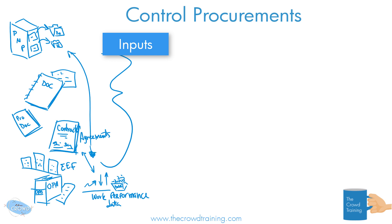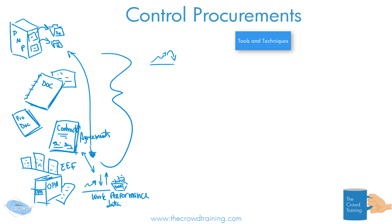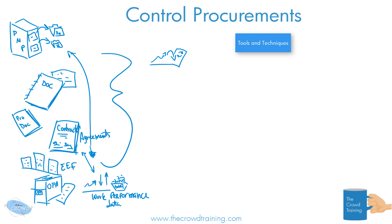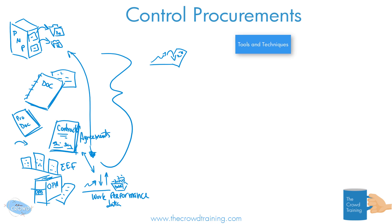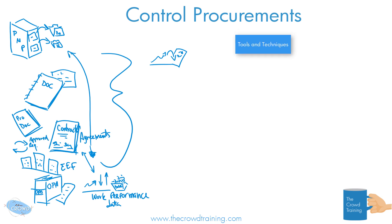We need to use that information to make sense of it — does it mean things are trending fine, or are things going to fall off a cliff and we have to maybe submit a change request? I also missed one more input: we might have changes that have come in. Make sure these are the approved change requests, not just any change requests.